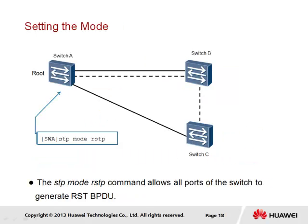RSTP is enabled by setting the mode within the switch using the command stp mode rstp. The default mode is MSTP within VRP, and therefore this command needs to be set if RSTP is to be used. Each switch in the spanning tree topology must be configured with this command to ensure a complete RSTP-enabled switching network.